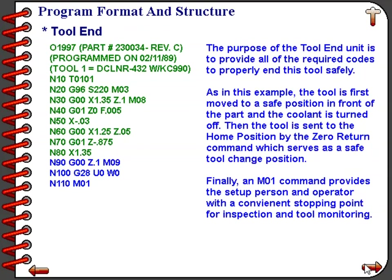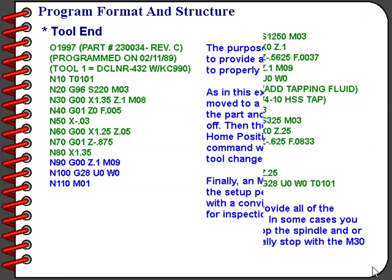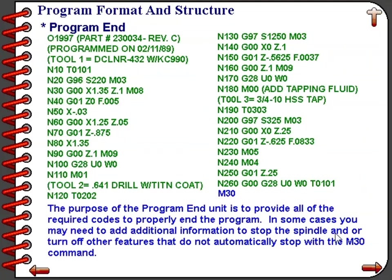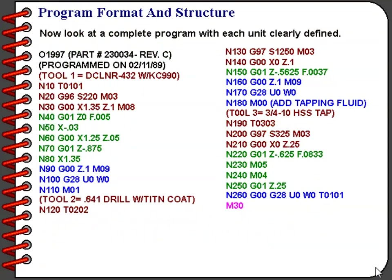The tool ending section performs all tasks necessary to get the tool away from the part to a safe place where the turret can be indexed to any tool, to turn off the coolant or spindle if necessary, and to provide an optional stopping point so the setup person can check the machining operation just performed. In many programs, the program ending section will consist of only an M30, which is really all that is required.